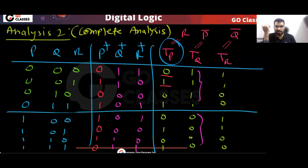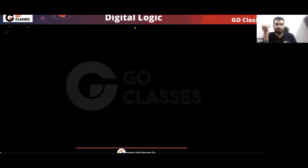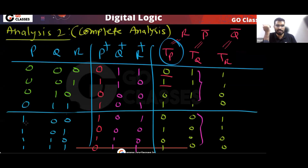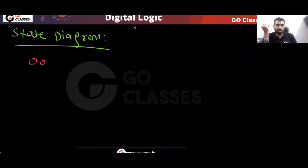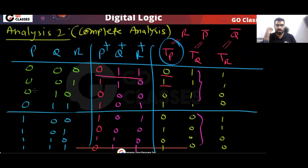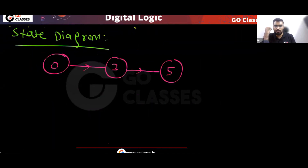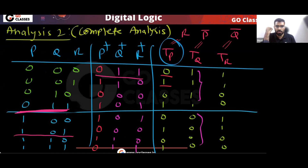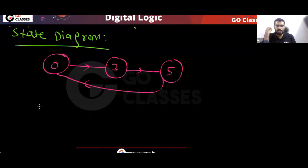Now you can very easily create the state diagram. You don't have to write 000 — just write 0. From 0 you go to 3, from 3 you go to 5, and from 5 you go back to 0.